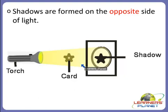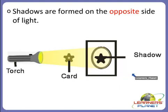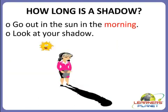Using your hands you can make interesting shadows on the wall — like a dog, a snake, a bird, a deer, and so on. So children, how long is a shadow?